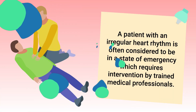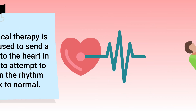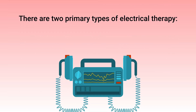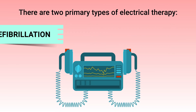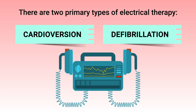A patient with an irregular heart rhythm is often considered to be in a state of emergency which requires intervention by trained medical professionals. Electrical therapy is often used to send a shock to the heart in order to attempt to return the rhythm back to normal. There are two primary types of electrical therapy: cardioversion and defibrillation. However, for this video we're specifically focusing on defibrillation.